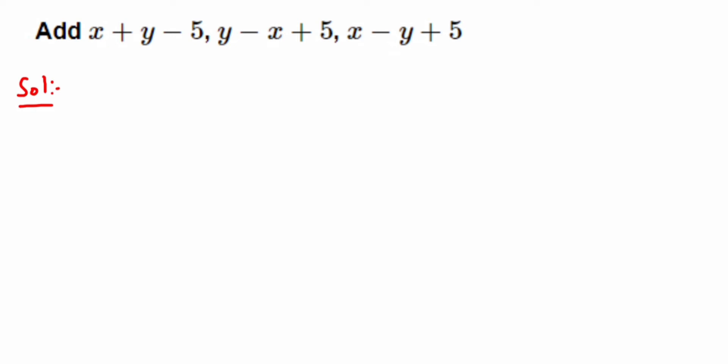First, the horizontal method. The first expression is x plus y minus 5, plus the second expression which is y minus x plus 5, plus the third expression, x minus y plus 5.